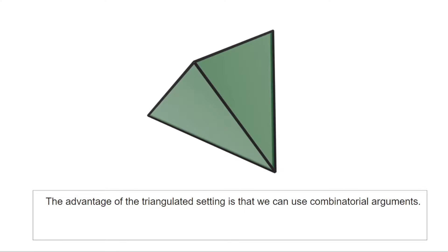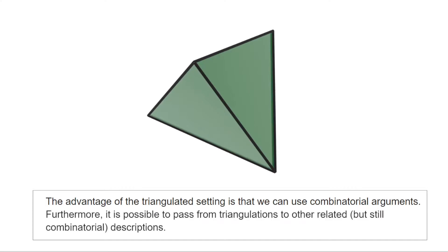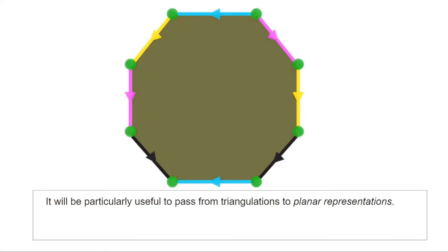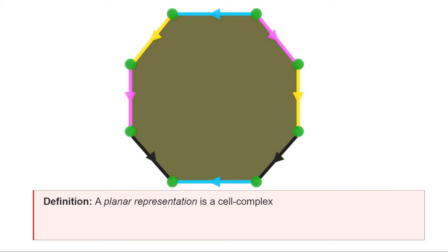The next step in the proof consists of passing from triangulations to other more convenient combinatorial descriptions. The description we're interested in, which you may already be familiar with, is what we call a planar representation. Much like a simplicial complex, a planar representation is a cell complex whose attaching maps are particularly simple.